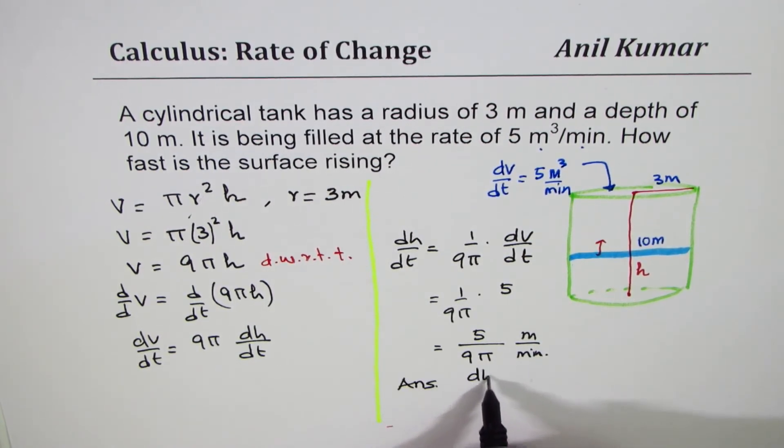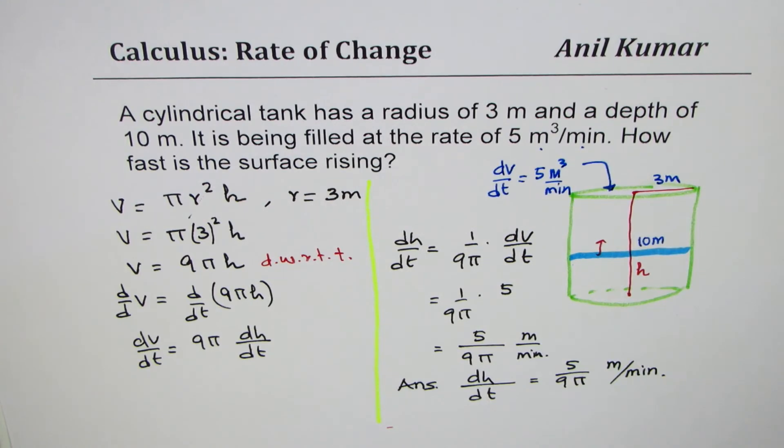So we get our answer: the rate of surface rising is equal to 5 over 9π meters per minute. So I hope that helps you understand the concept. In this list we'll have a few examples on cones, rectangles, distance, speed, and different kinds of rate of change to give you good practice, and I hope that will prepare you for your test. Thank you and all the best.